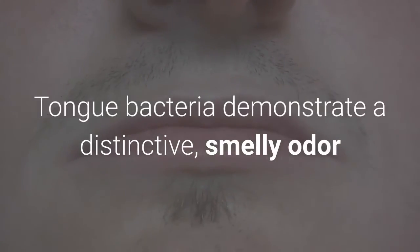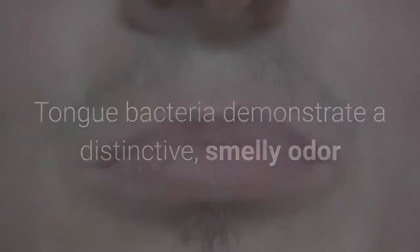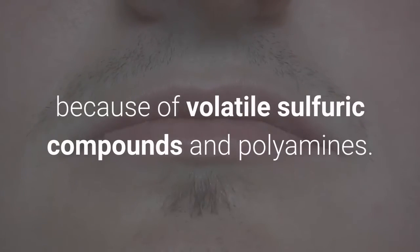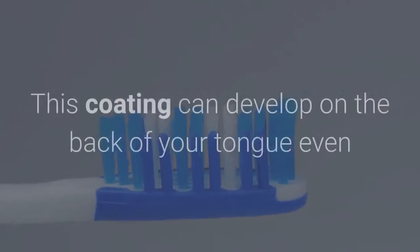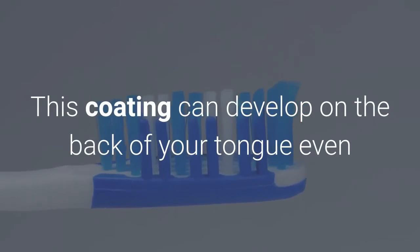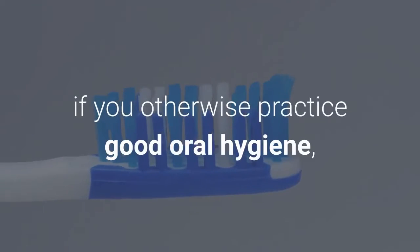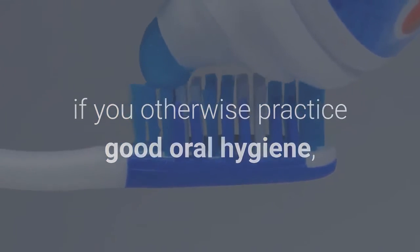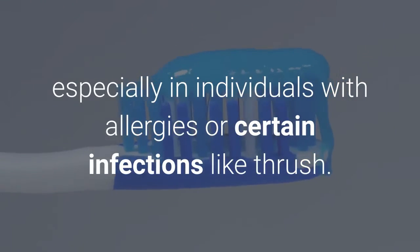Tongue bacteria demonstrate a distinctive smelly odor because of volatile sulfuric compounds and polyamines. This coating can develop on the back of your tongue even if you otherwise practice good oral hygiene, especially in individuals with allergies or certain infections like thrush.